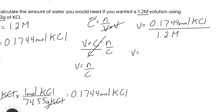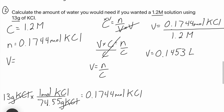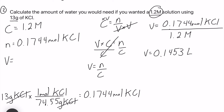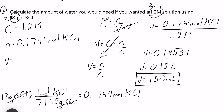Calculating 0.1744 divided by 1.2 gives 0.1453 liters. Checking significant figures: two in 1.2 molar and two in 13 grams, so we round to 0.15 liters. Converting to milliliters by multiplying by 1000 gives 150 milliliters. That's how much water you need to create a 1.2 molar solution with 13 grams of potassium chloride.